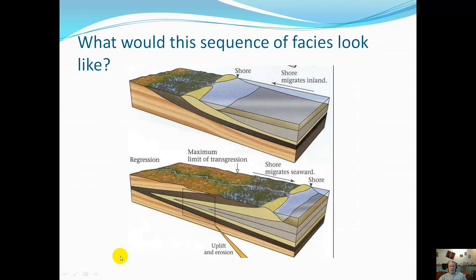Here are some things we also saw in class. Here we have a transgression where the water is increasing, so it would move into the shore more. And here it migrates seaward, which would be a regression. You can take any of these rock layers and determine whether the water has risen or the water levels have receded.